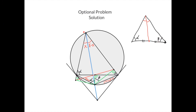In the case of the symmedian, for example here, we get that sin of (gamma minus x) divided by sin of x equals sin of alpha over sin of beta. So if this were a median, we would have gotten sin of (gamma minus x) over sin of x equals sin of beta over sin of alpha — but because it's a symmedian, we get the opposite: sin of (gamma minus x) over sin of x equals sin of alpha over sin of beta.